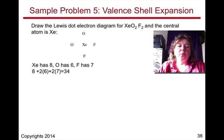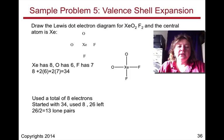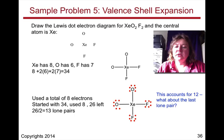Xenon has 8, oxygen has 6, fluorine has 7. That gives us a total of 34 electrons. Let's put single bonds around - we have a single bond between oxygen and xenon, and the fluorines.